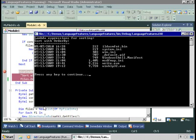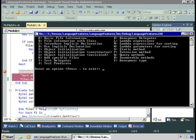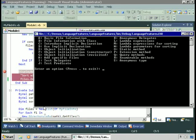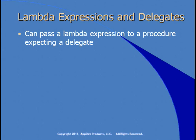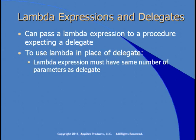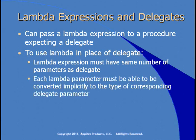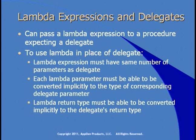We need to look at what that Func thing is, because OrderBy was expecting a parameter that is a Func. What is a Func? Clearly it must be some kind of delegate. Before we discuss that, we need to talk about lambda expressions and delegates. You can pass a lambda expression to a procedure that's expecting a delegate — as you saw, it certainly worked. To use a lambda in place of a delegate, the lambda expression must have the same number of parameters as the delegate. In our case, we were passing a lambda expression with one parameter in place of a delegate expecting one parameter — our Predicate delegate.